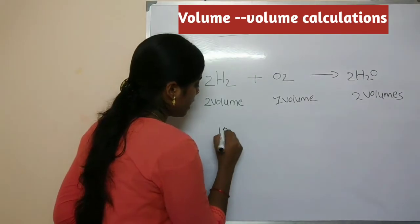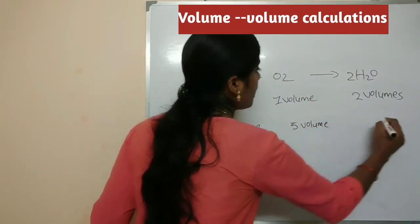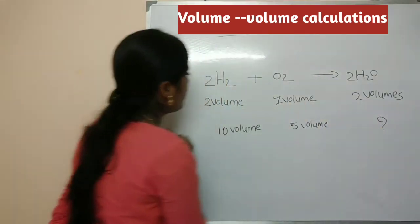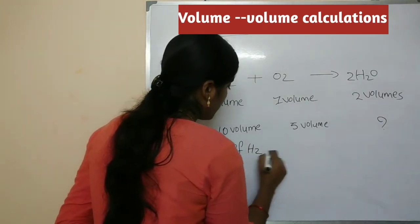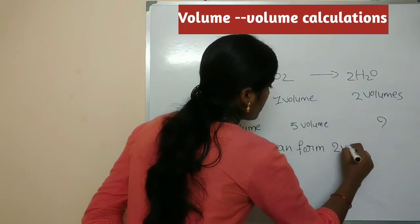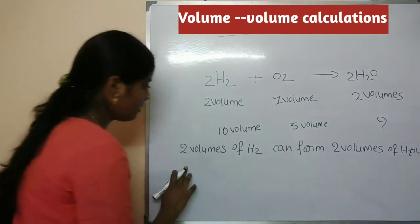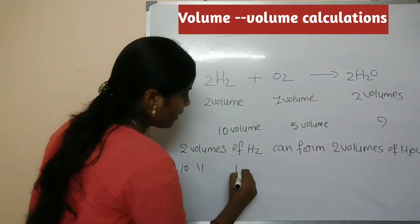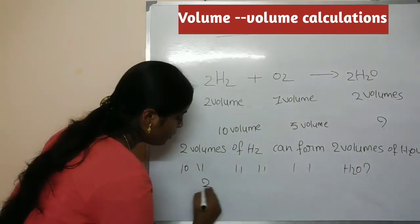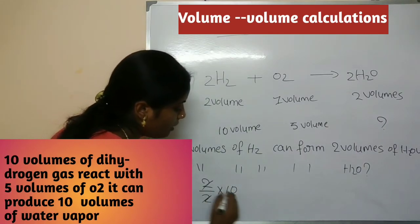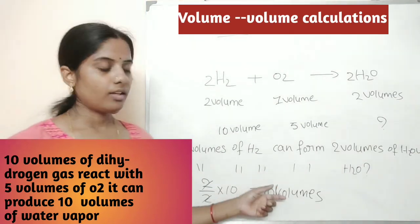So now applying this: 10 volumes of dihydrogen reacted with 5 volumes of oxygen. Using the ratio, 10 volumes of H₂ can form 10 volumes of water vapor. This is how you calculate using the volume-volume method.